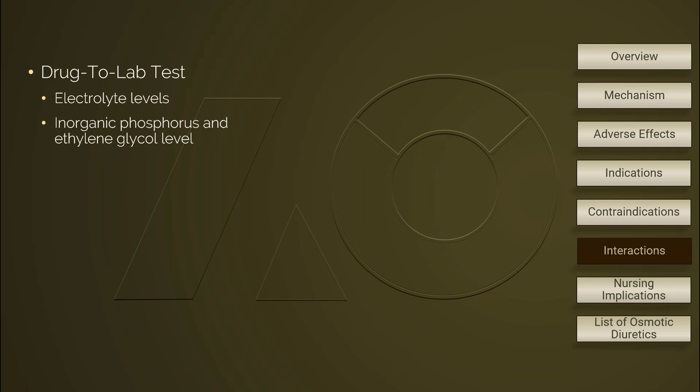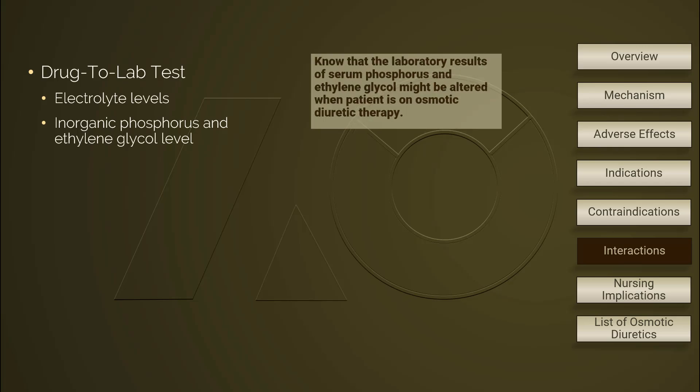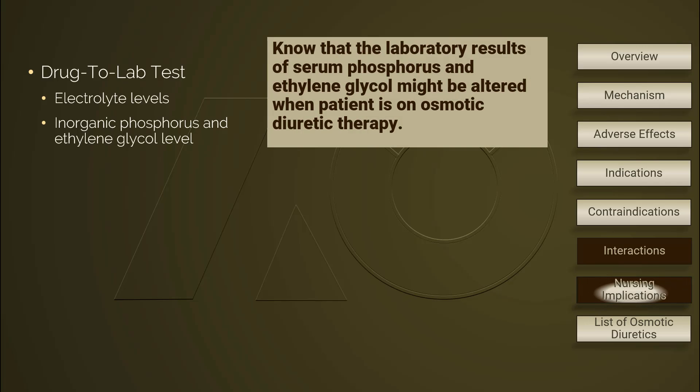Electrolyte levels could be increased or decreased during osmotic diuretic therapy. Osmotic diuretics can also alter the levels of inorganic phosphorus and ethylene glycol. Nursing care tailored for drug-to-lab interactions includes knowing that these lab results might not be accurate, and other assessments or examinations should be implemented for better clinical judgment.